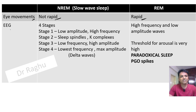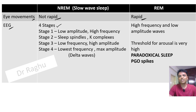Now let's understand the differences with respect to the EEG, that is the electroencephalogram. There are four stages which come under non-rapid eye movement sleep: stage 1, stage 2, stage 3, and stage 4.